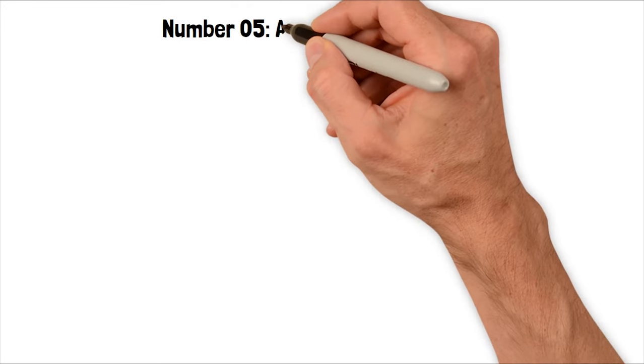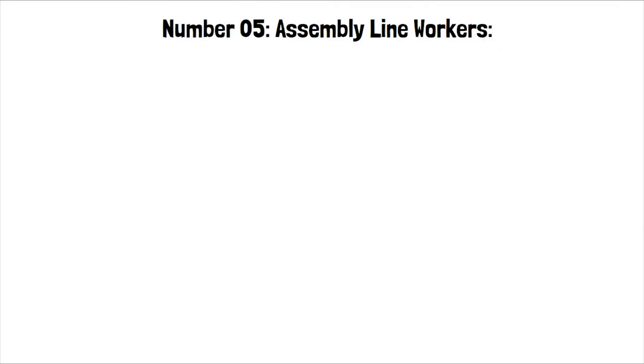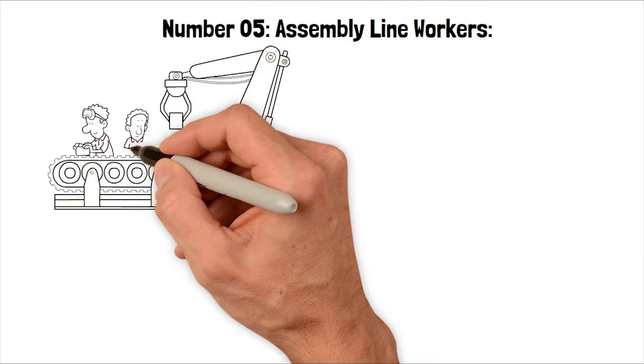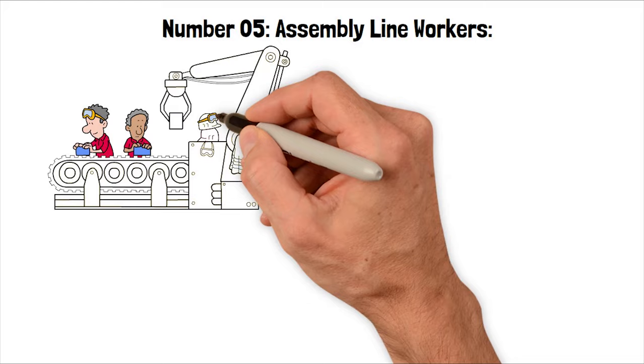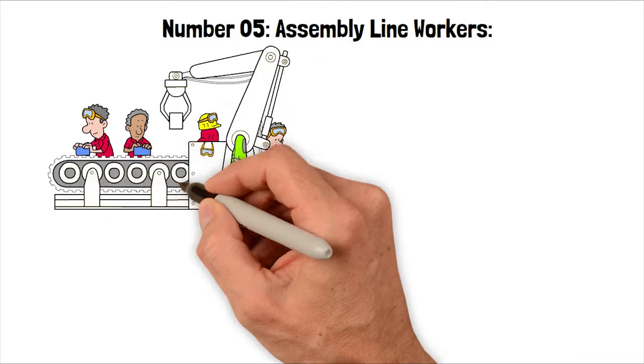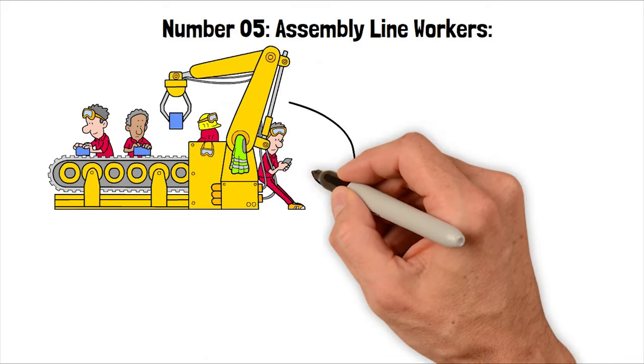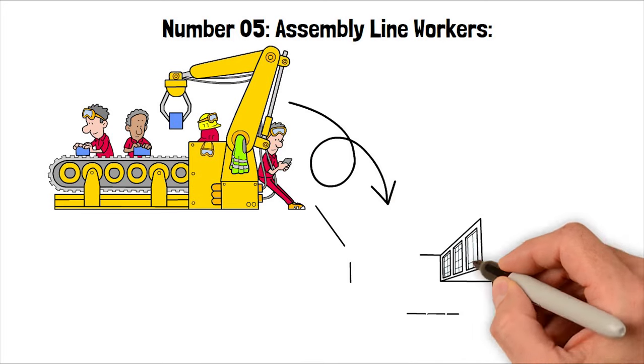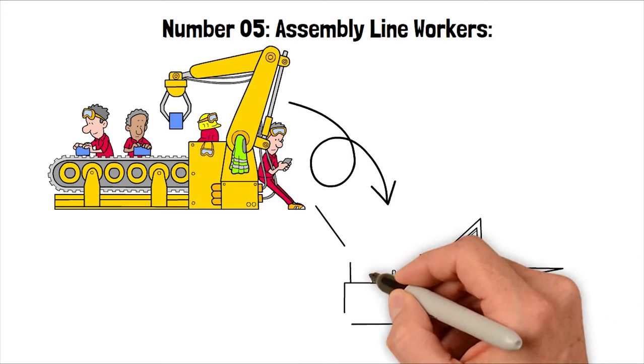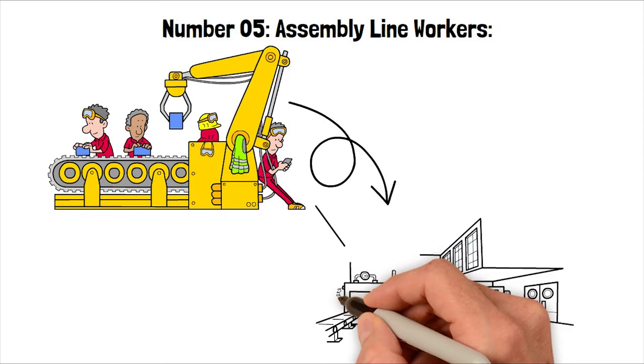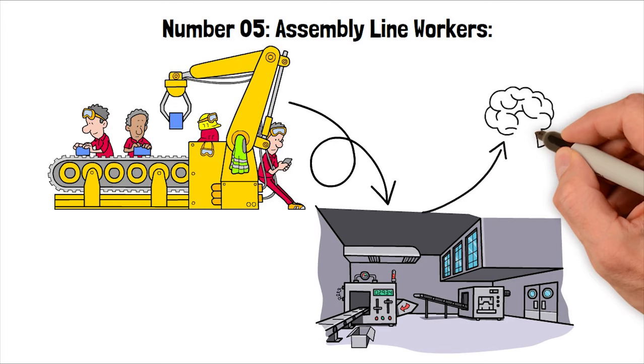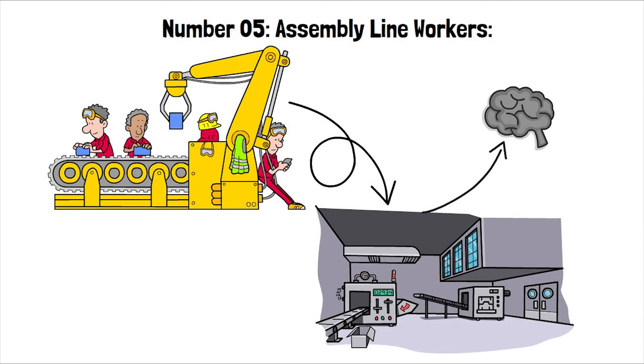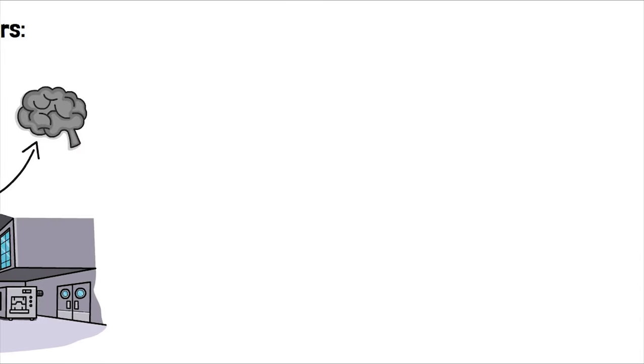Number five, assembly line workers. Assembly line workers are seeing changes as automation takes over manufacturing tasks. Robots now handle repetitive jobs on assembly lines, boosting efficiency, but reducing the need for human workers. Despite this shift, there are opportunities for workers to oversee automated systems and focus on creative tasks. So while traditional roles may shrink, there are new chances for skilled workers to adapt alongside automation.